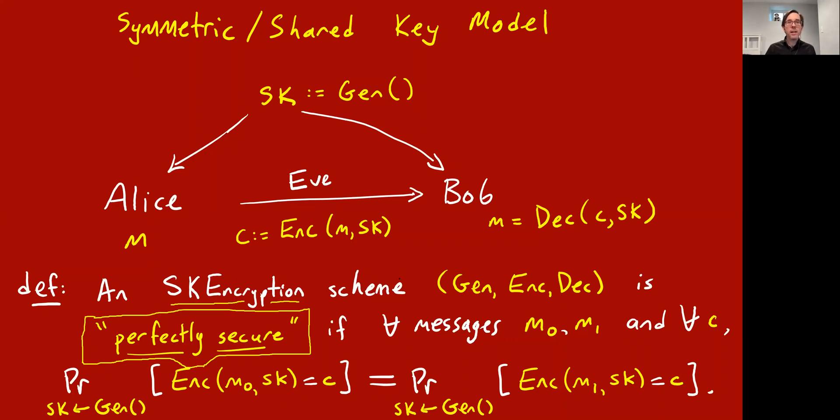In any case, we say that a SKE, a symmetric key encryption scheme, which consists of these three algorithms, key generation, encoding, and decoding, is perfectly secure if for every pair of messages M0 and M1 that Alice might want to send, and for every potential ciphertext string C that she might send, we have an equality between two probabilities. And these probabilities are when you do Alice's role with message M0 and Alice's role with message M1. So you draw the secret key from the generation algorithm, and you encode the message 0 with a secret key. We look at the probability that this results in the ciphertext C, and that should be the same for all pairs of messages and all ciphertext C.